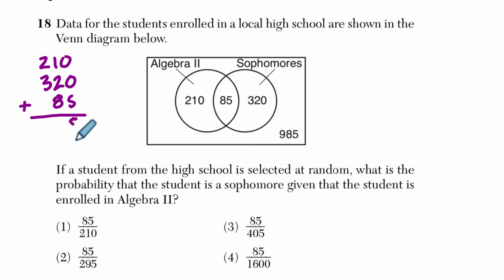and what I get is 615 students, but there are also 985 students who are not in algebra 2 or sophomores, so I want to add those up.